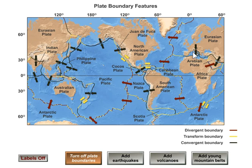The yellow lines show us the transform boundaries — some of the major transform boundaries where the plates are sliding side by side past one another.